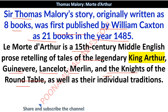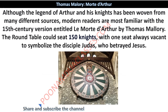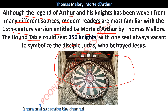What are the Round Table? Who are the knights? What are the characters? All characters we will notice. We are going to find a lot of resources and folklore. Modern readers are more familiar with the 15th century version entitled Le Morte d'Arthur by Thomas Malory. Around the Round Table, about 150 knights sat there, and one seat was always vacant to symbolize the disciple Judas, who had betrayed Jesus. You will also write this in the introduction.